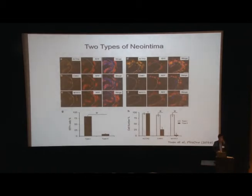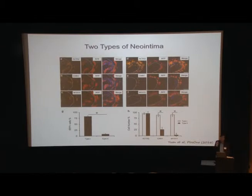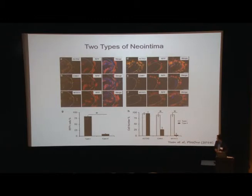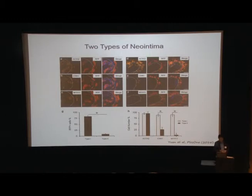We performed a neointima formation study using lineage-tracing myosin-heavy chain mice by inducing injury in the artery. Interestingly, we found two types of neointimas. In one case, as many people have observed, myosin-heavy chain positive cells — smooth muscle cells labeled by RFP — contribute to the majority of the neointima in the lumen. However, in at least 50% of mice, there are almost no positive smooth muscle cells in the neointima, suggesting some neointimas could actually be derived from non-smooth muscle cells.